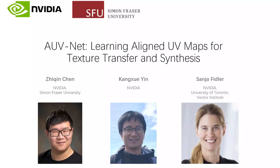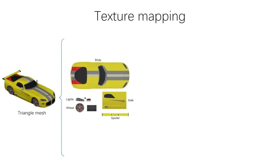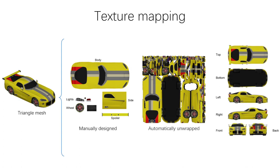Hello everyone. I will present our work at UVNet. In this work, we tackle the problem of texture representation for 3D shapes. Texture mapping is perhaps the most common way to represent the color surfaces of 3D shapes. Several different ways can be used to parameterize the surface, so that for a single shape, there are infinitely many possible texture images. Such ambiguity and lack of consistency between different shapes pose a challenge for 3D deep learning.